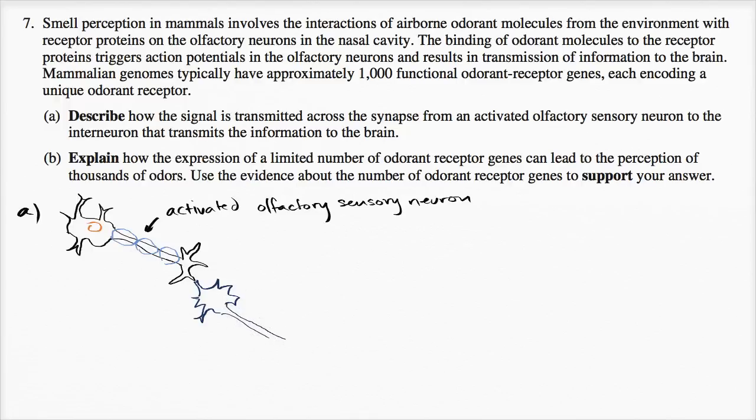And if we zoom in on the synapse, where we have to transmit the signal between the two, we would see the axon terminal of the sensory neuron. Maybe it looks something like that. And then the interneuron, right over that, just like this. And this is the synapse, so this is a zoomed in of the synapse.